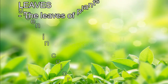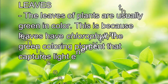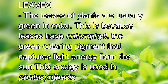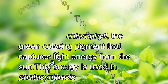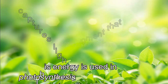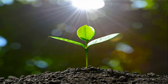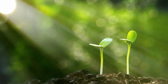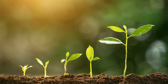Leaves: the leaves of plants are usually green in color because leaves have chlorophyll, the green coloring pigment that captures light energy from the sun. This energy is used in photosynthesis. The food which plants need in order to live and grow is manufactured in the leaves. Photosynthesis is the process in which plants absorb light energy from the sun and convert it into chemical energy stored as food.